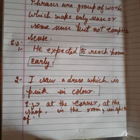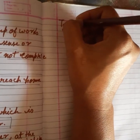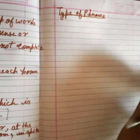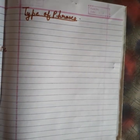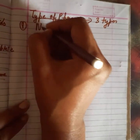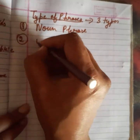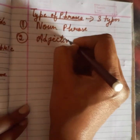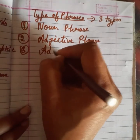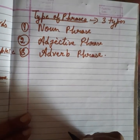अब बच्चो, आता है types of phrases। Types of phrases में हम mainly three types study करते हैं। कौन-कौन से three types हैं? First होगा noun phrase, second होगा adjective phrase, और उसके बाद होगा adverb phrase। अब adjective phrase और noun phrase particularly होते क्या हैं और किस तरीके से हम इनको पहचान सकते हैं?